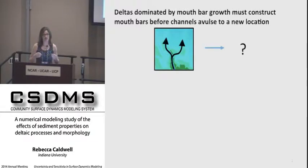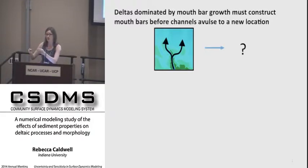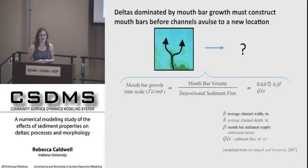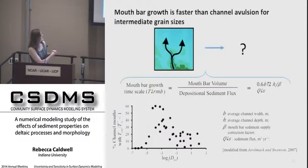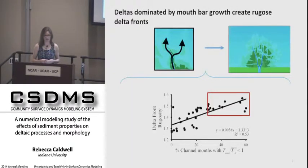How does the process of mouth bar growth affect delta morphology? An increased occurrence of mouth bar progradation creates local shoreline perturbations that increase delta front rugosity. But for this process to dominate, mouth bar growth must outpace channel avulsion, because a channel needs to remain in a location long enough to construct a mouth bar before it avulses. We calculate mouth bar growth timescales as the ratio of a channel mouth bar's volume to its depositional sediment flux. This nonlinear relationship shows that intermediate grain sizes produce deltas with the most channels dominated by river mouth bar growth, which also relates to the highest measured delta front rugosities.